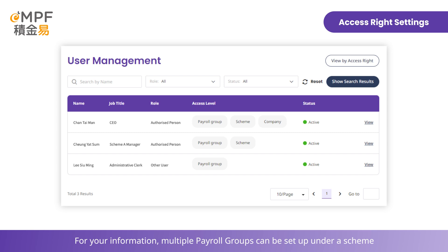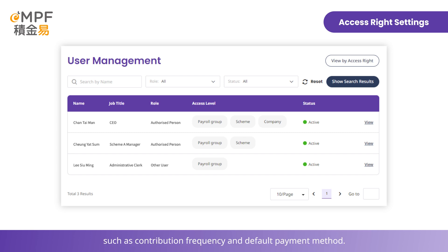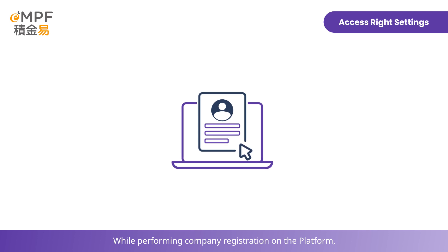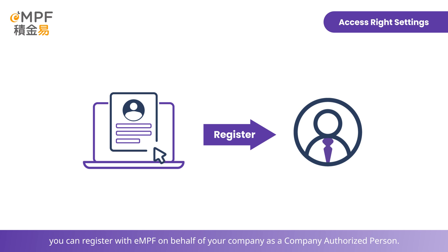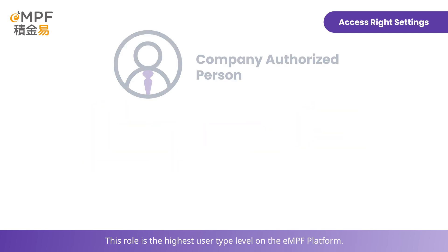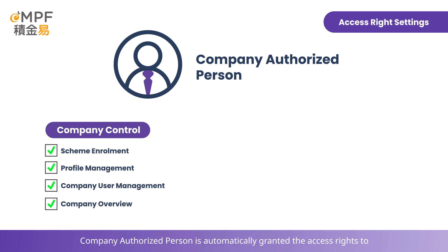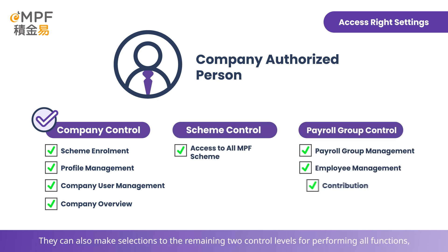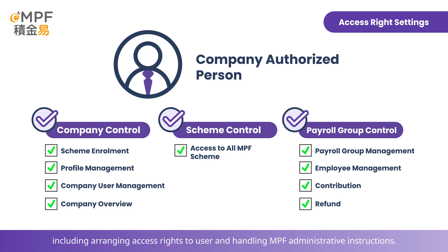For your information, multiple payroll groups can be set up under a scheme for the purpose of differentiating contribution details, such as contribution frequency and default payment method. Employers can refine the user's access rights down to the level of payroll group. While performing company registration on the platform, you can register with EMPF on behalf of your company as a company authorized person. This role is the highest user type level on the EMPF platform, and is automatically granted access rights to the functions in company control by default. They can also make selections to the remaining two control levels for performing all functions, including arranging access rights to users and handling MPF administrative instructions.